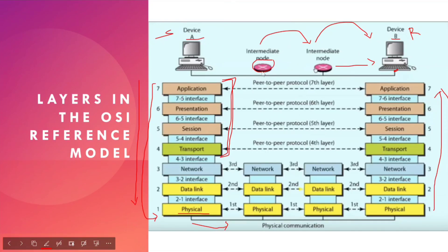When transport layer data is processed at the network layer, then data link, then physical layer, the data is not directly readable at each step. For security, encryption methods are used so that even if an intermediary node reads the data, it cannot understand what device A actually sent to device B. The middleman or router cannot see the actual content. That is the basic purpose of the OSI model. For more details we will see further. If you found this video useful or informative, please subscribe to the channel. Thank you.